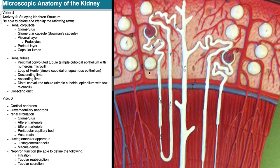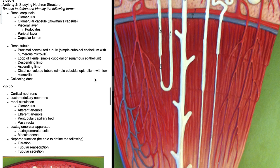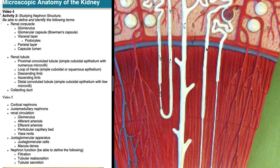The epithelial tissues lining these structures are important to know. The proximal convoluted tubule is lined with microvilli-covered simple cuboidal epithelium. In the thicker limbs of the loop of Henle, you also find simple cuboidal epithelium, while the thin limb region has simple squamous epithelium. The distal convoluted tubule is lined primarily with simple cuboidal epithelium.